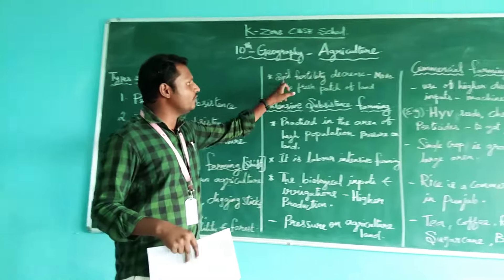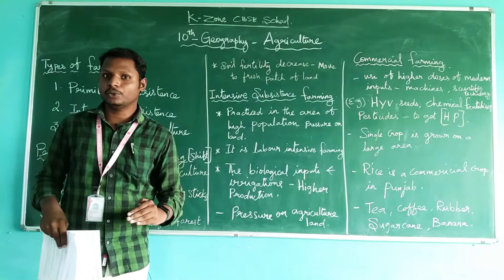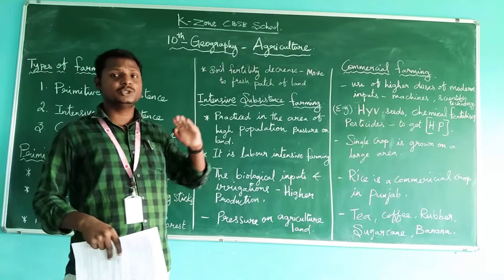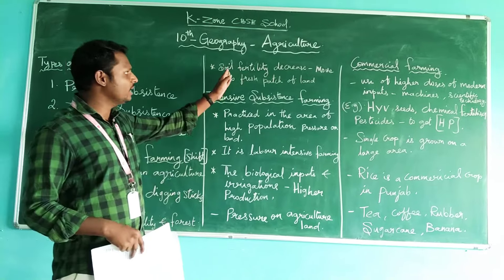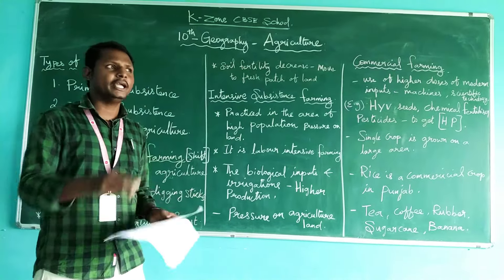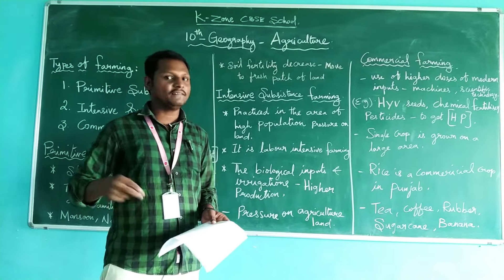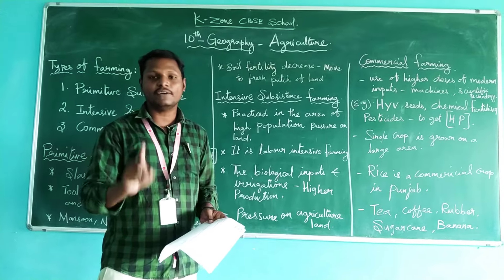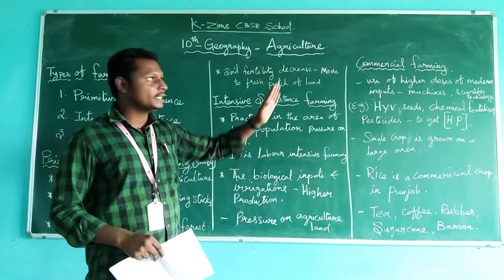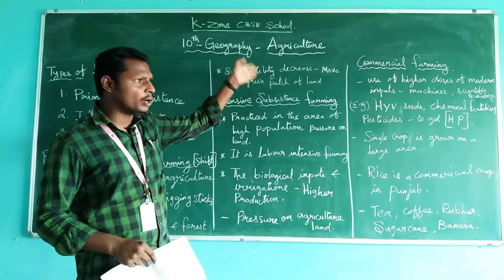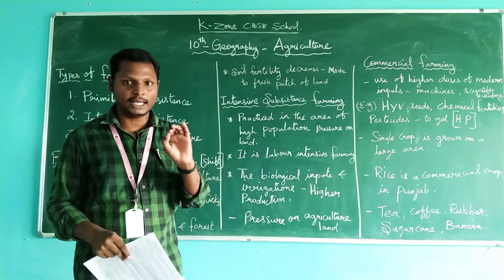When the soil fertility decreases, they move to another place and choose a fresh patch of land to cultivate crops. Usually soil fertility remains for three to five years, after which it decreases. However, this does not permanently affect the natural fertility of the land. They mostly depend upon natural fertility and do not use any chemical or biological inputs in the soil.